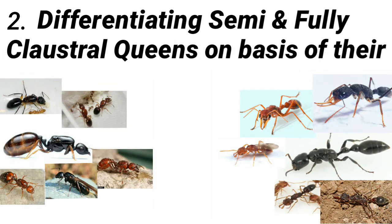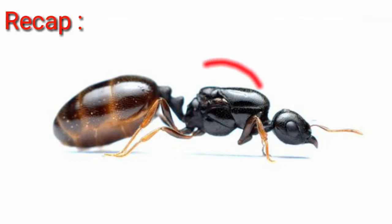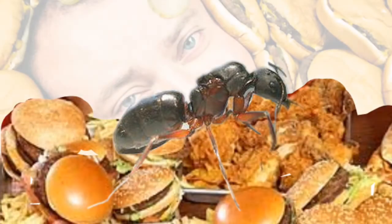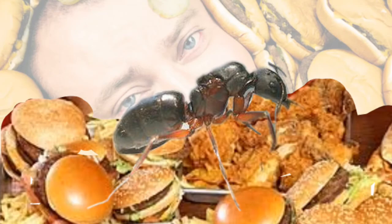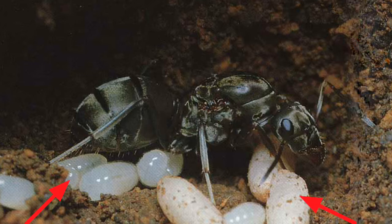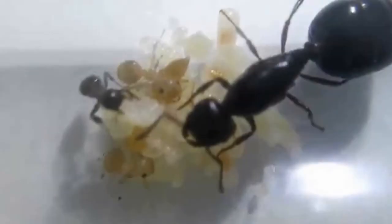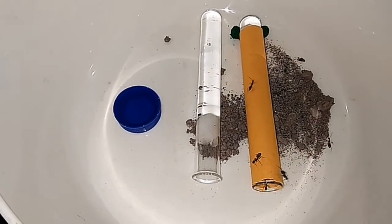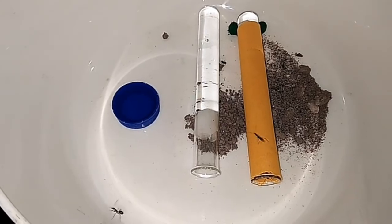The second point is differentiating semi and fully claustral queens on the basis of their feeding process. Queens have wing muscles and fat reserves to store their food. A fully claustral queen has a large amount of these wing muscles and fat reserves, packed with enough energy and food that after setting up their claustral chamber, they don't have to eat anything for almost two months. Their wing muscles feed them as well as their growing brood during the founding stage, and when the first workers arrive, it is their duty to bring food from the wild. So basically, a fully claustral queen never has to forage for food in her entire life.